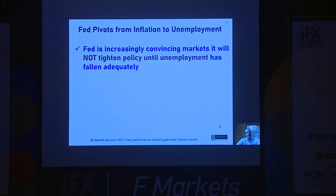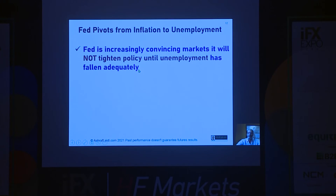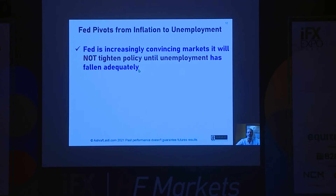What's behind this move? The Federal Reserve has pivoted from inflation to unemployment — it has moved the goalposts. The Fed is increasingly convincing the markets that it will not tighten policy, will not taper, and will not reduce asset purchases until unemployment has fallen adequately. A year ago, it said it wanted inflation to push towards 2%. But now inflation is racing towards 3%. Fed Vice Chair Richard Clarida put it bluntly: yes, there is a rise in inflation, but it's going to be transitory, and he's looking for unemployment to fall further.